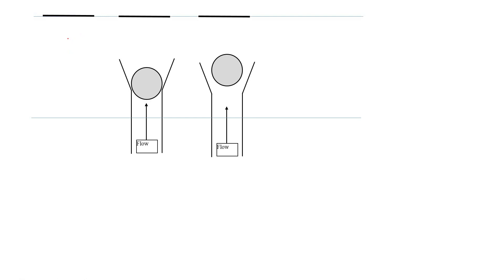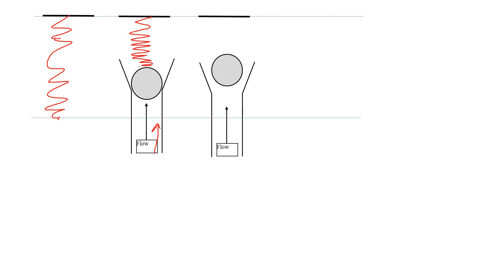Pressure relief valves are typically designed using a spring. Imagine a spring in its original length. Assume there is a flow coming from a pipe, and a ball is compressed by this spring - the spring is compressed and placed here.